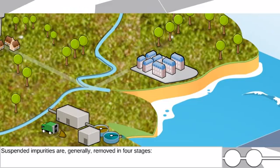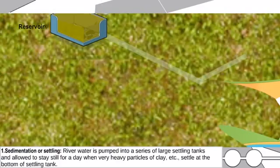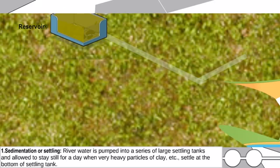Suspended impurities are generally removed in four stages. Stage one: sedimentation or settling. River water is pumped into a series of large settling tanks and allowed to stay still for a day, when very heavy particles of clay settle at the bottom of the settling tank.